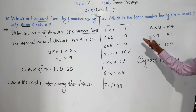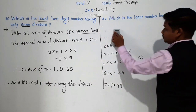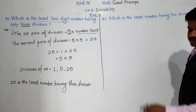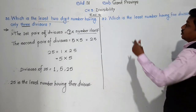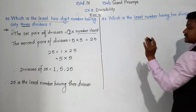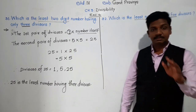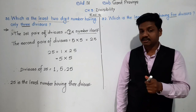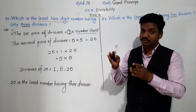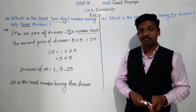Now write this down and we will move to question number 32. Question number 32 is also based on square numbers. See: which is the least number having 5 divisors? Here, 5 is an odd number of divisors. Whenever we have to find a number with an odd number of divisors, we have to think about square numbers or numbers with a repeating pair of divisors.